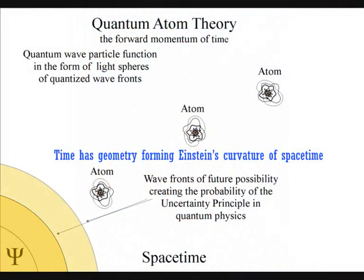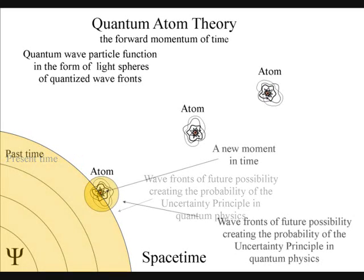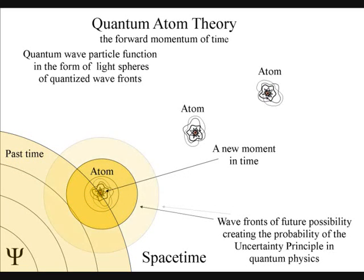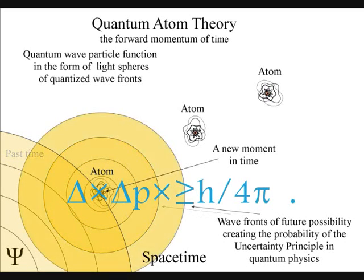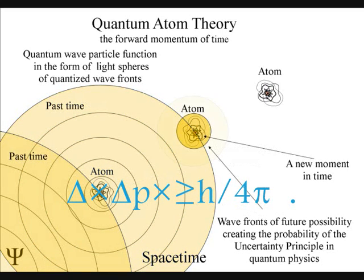Modern physics has no fundamental understanding of the arrow of time, but in a new theory called quantum atom theory, the continuous flow of time is formed by the emission and absorption of electromagnetic radiation or light.